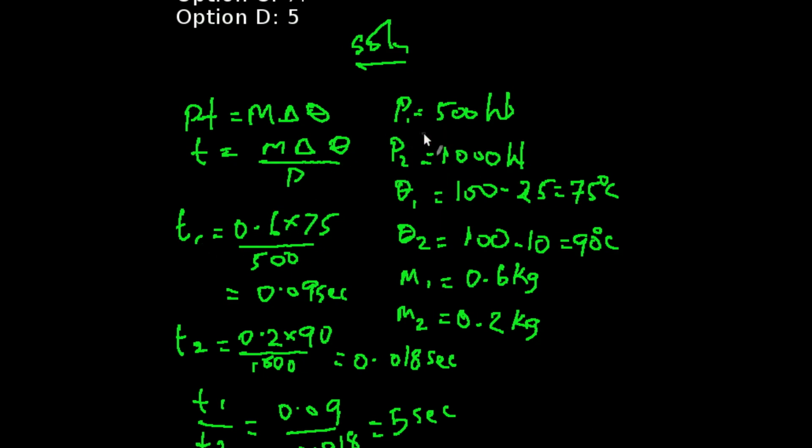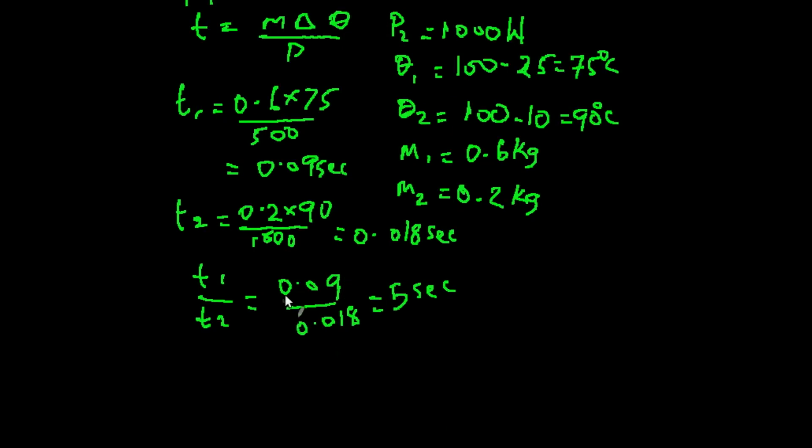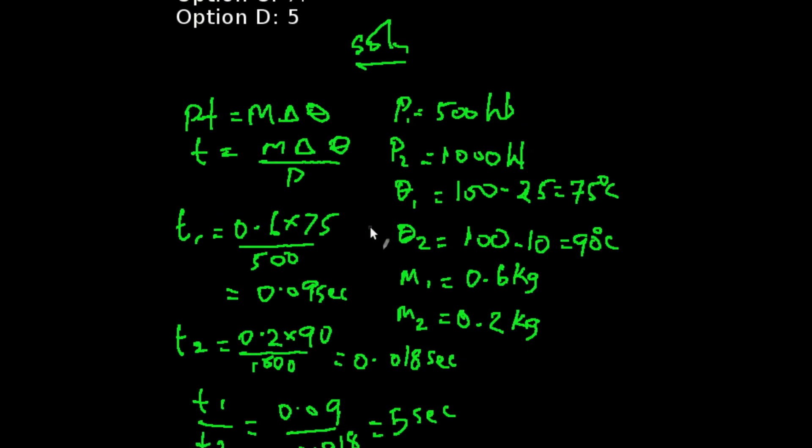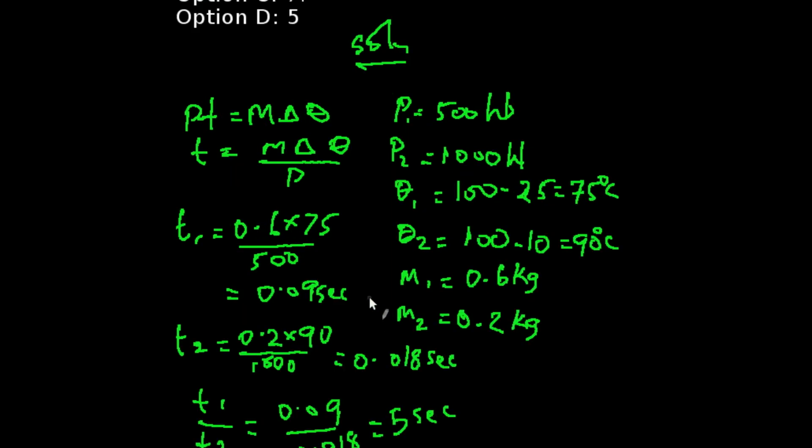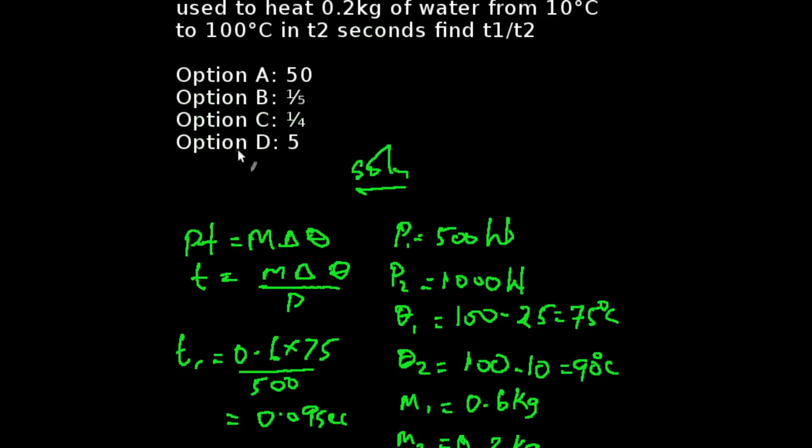So when our power is 500 watts, we're going to be having our T1 to be 0.6 times 75 over 500, and that will give us 0.09 seconds. Same thing applies to our T2, when our power is 1000 watts, we're going to be having T2 to be 0.2 times 90 all over 1000. So that will give us 0.018 seconds. So the ratio of T1 to T2 will simply be 0.09 all over 0.018, that will give us 5 seconds. That corresponds to option D.